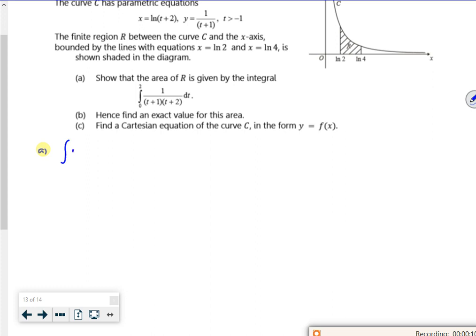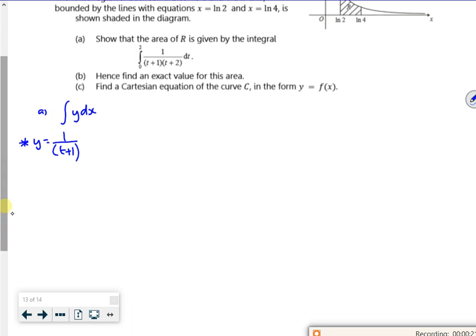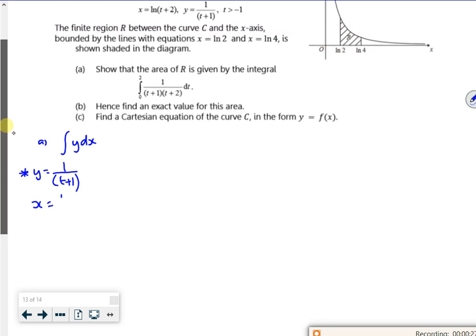So let's have a look at part A. Part A is an integral of y dx. So let's have a think. I know that y is 1 over t plus 1, and x is log of t plus 2. So if I differentiate it, dx by dt is 1 over t plus 2. If I differentiate the t plus 2, it's 1, so it's differentiated over itself.